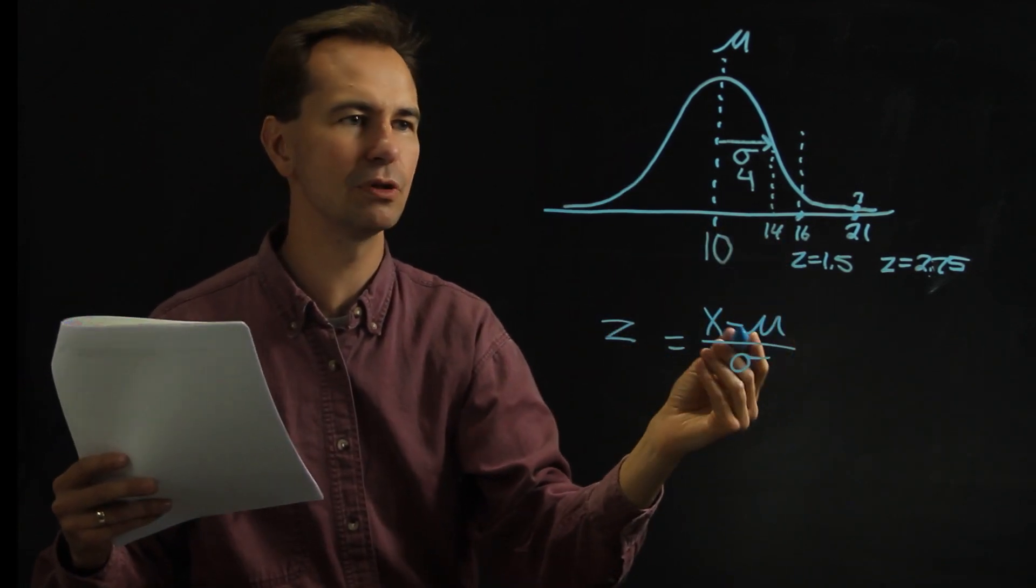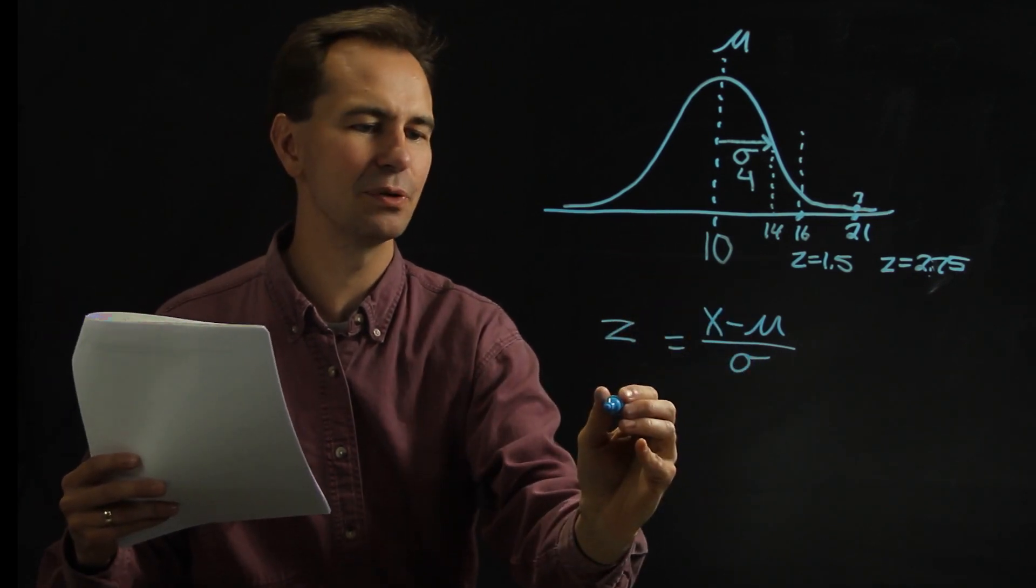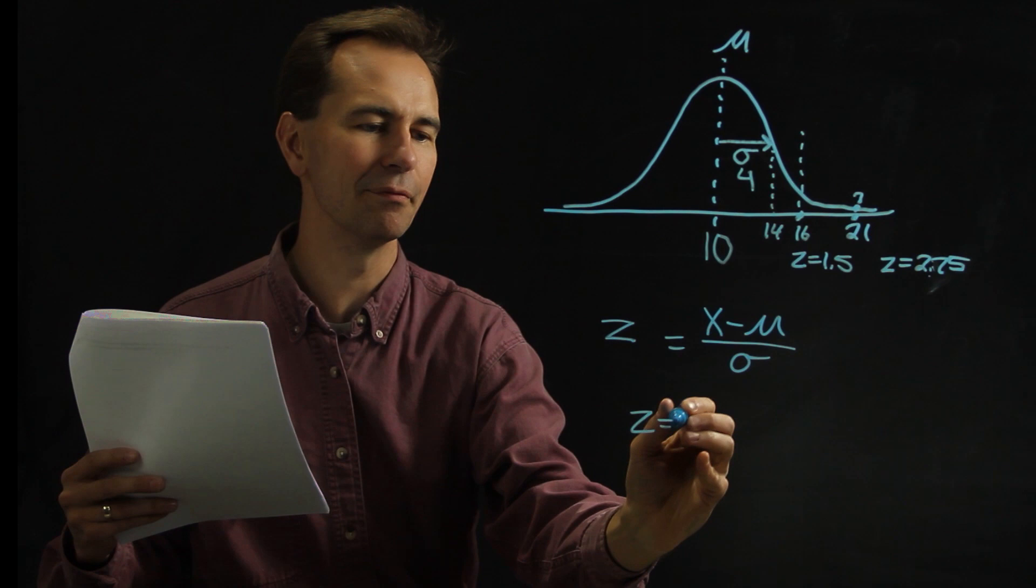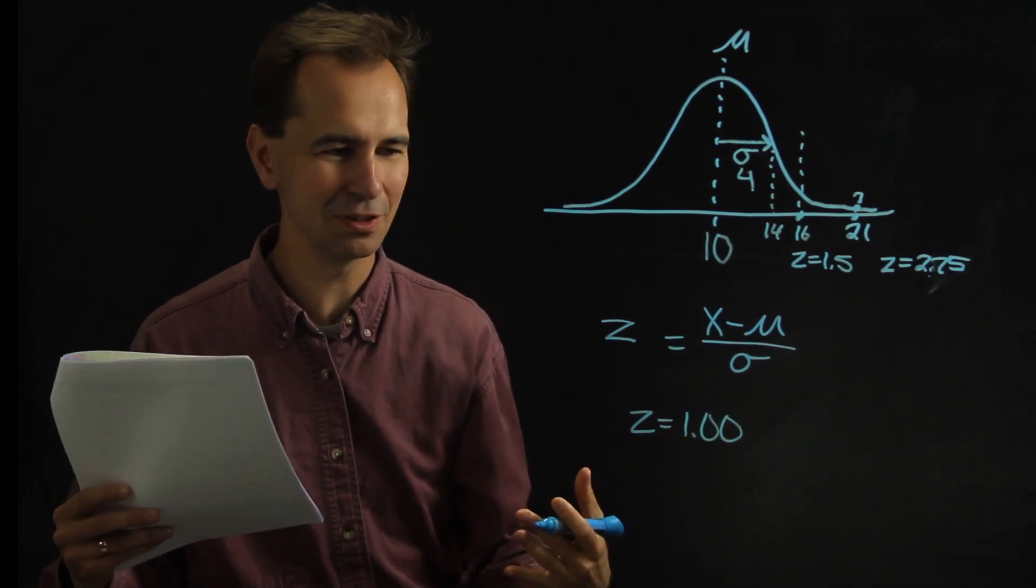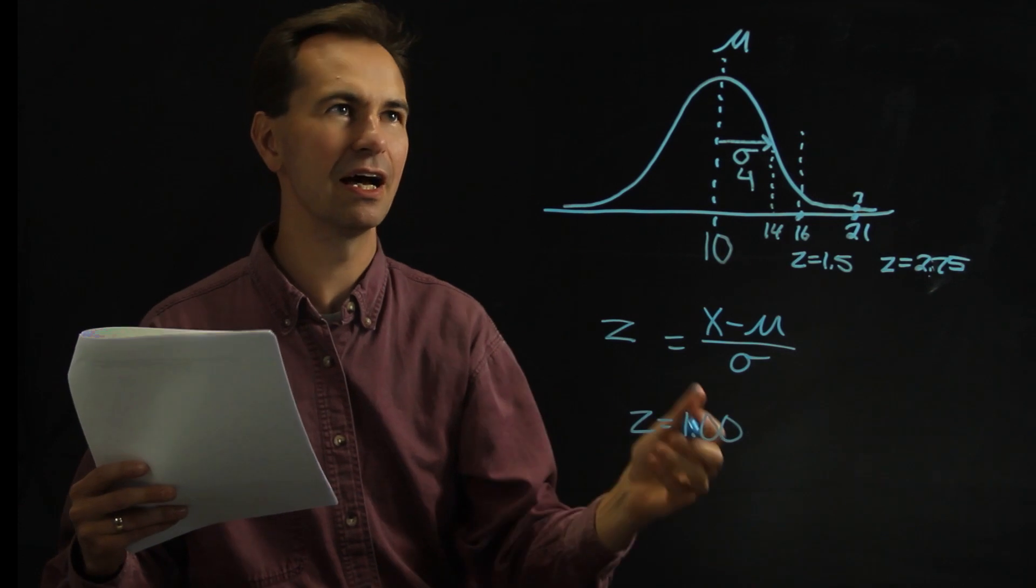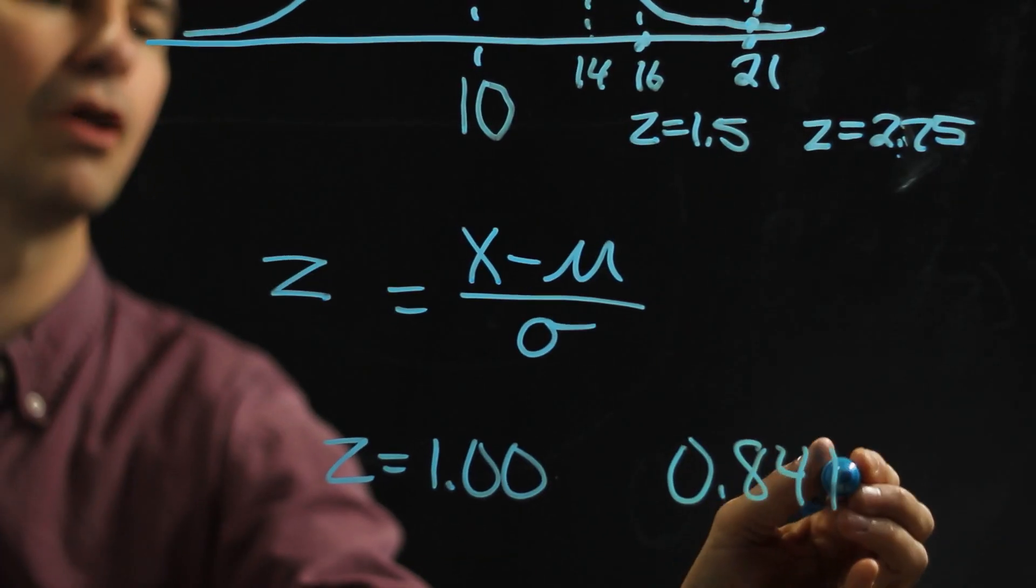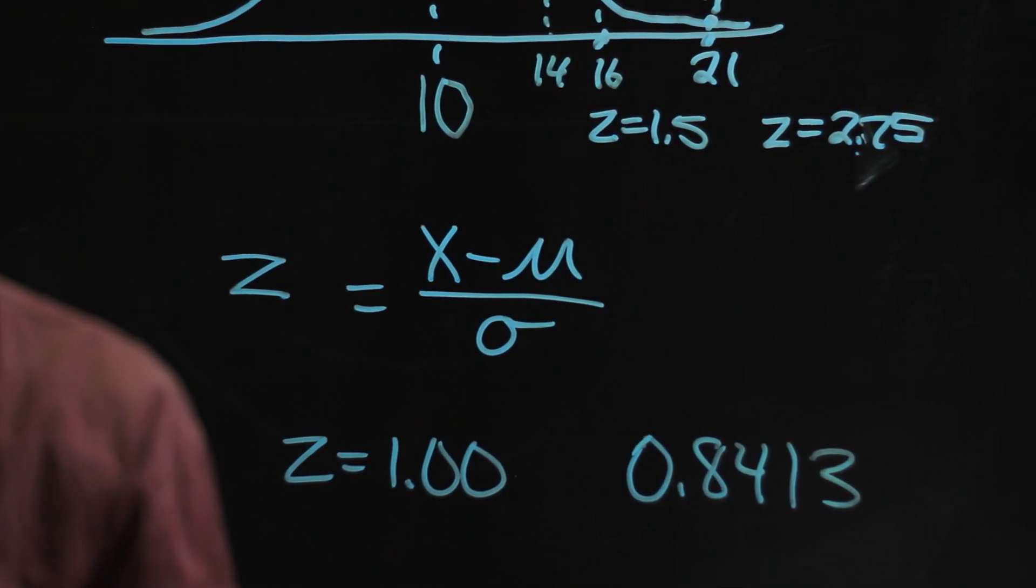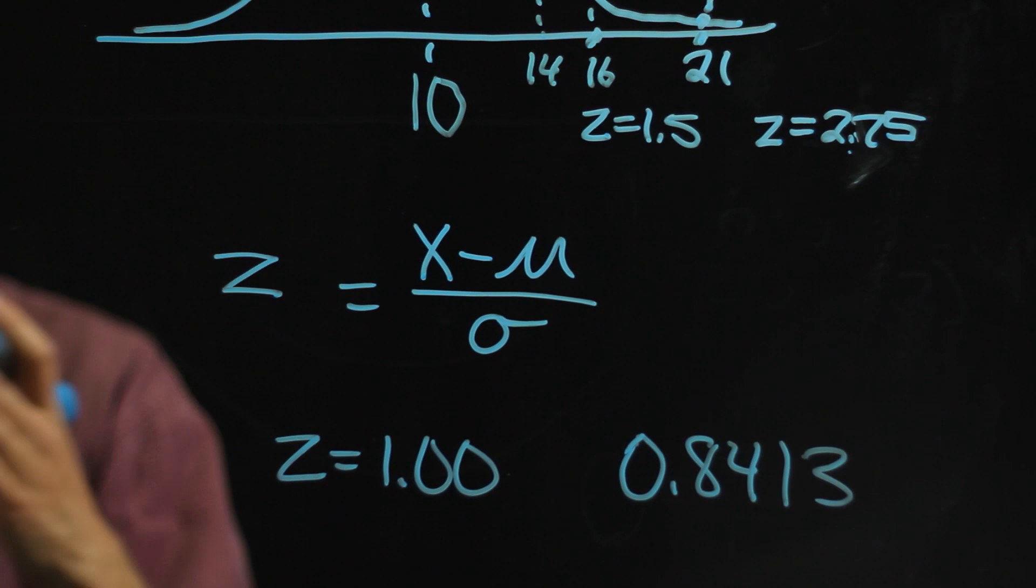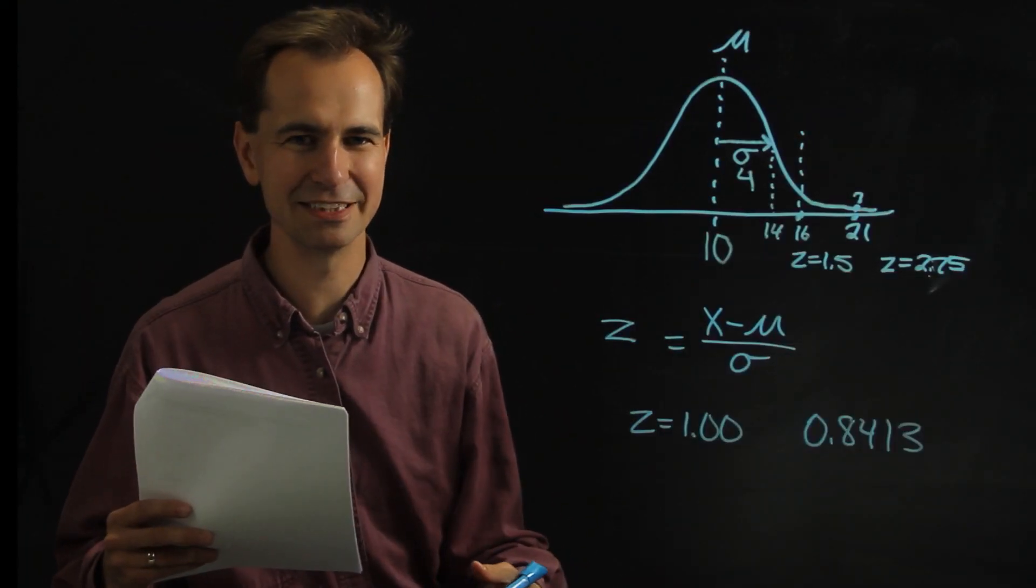So, for example, suppose for a certain point you had z of 1. You could look up in a z-table, and it would tell you a number of 0.8413. That means that 84.13% of the curve is to the left of that point that represents z equals 1.0.